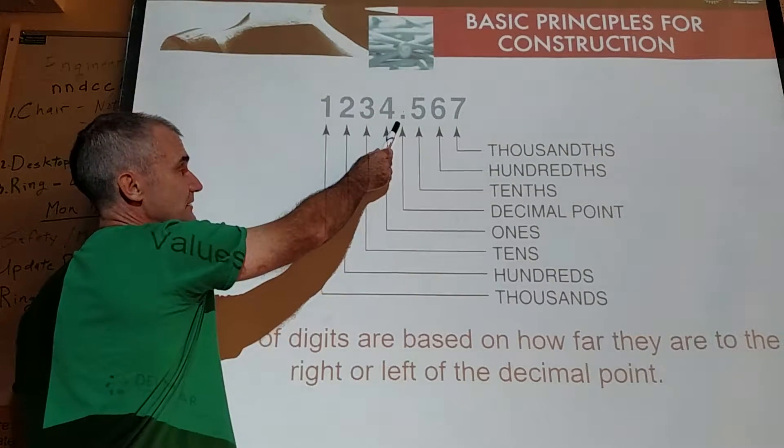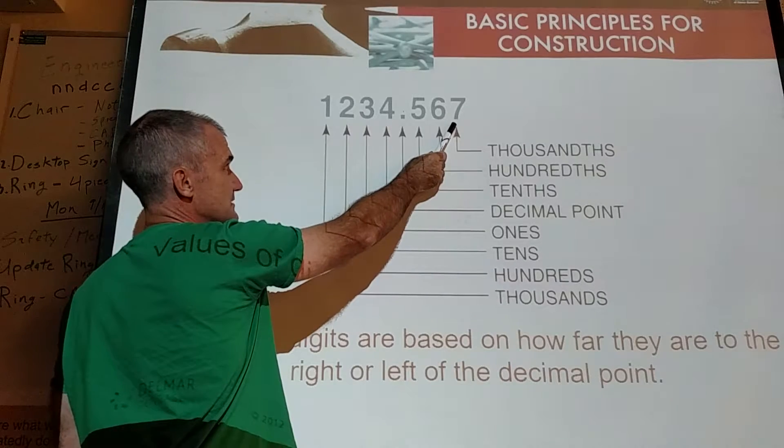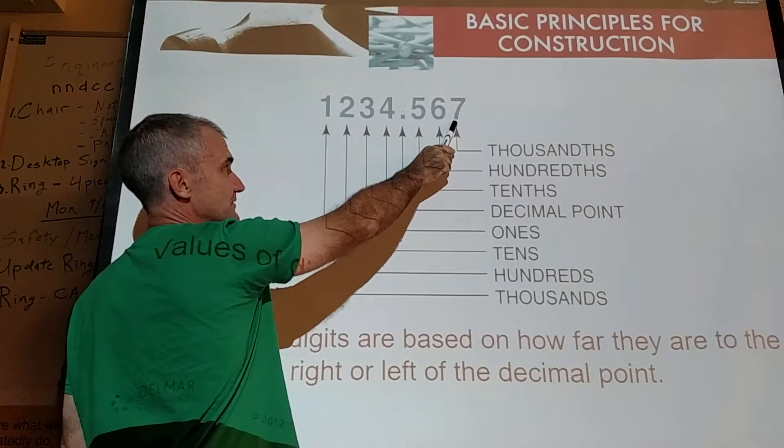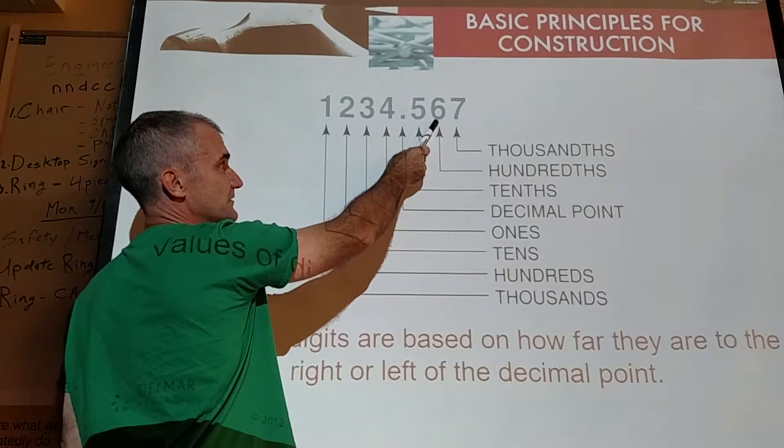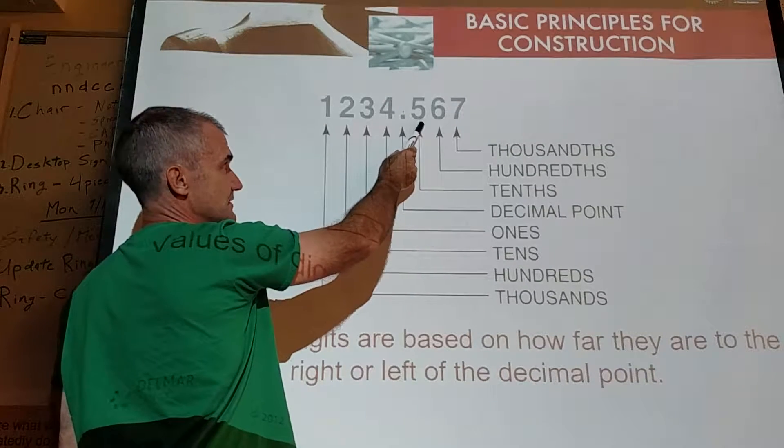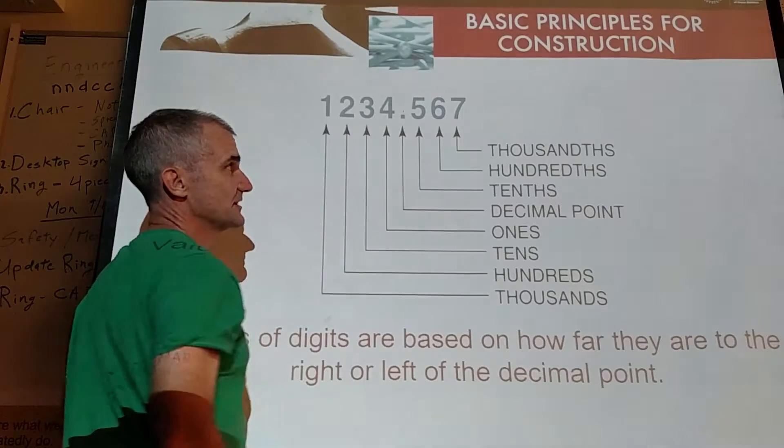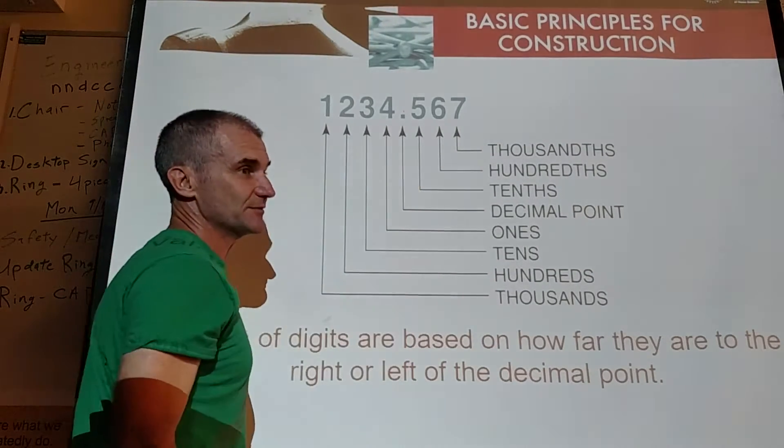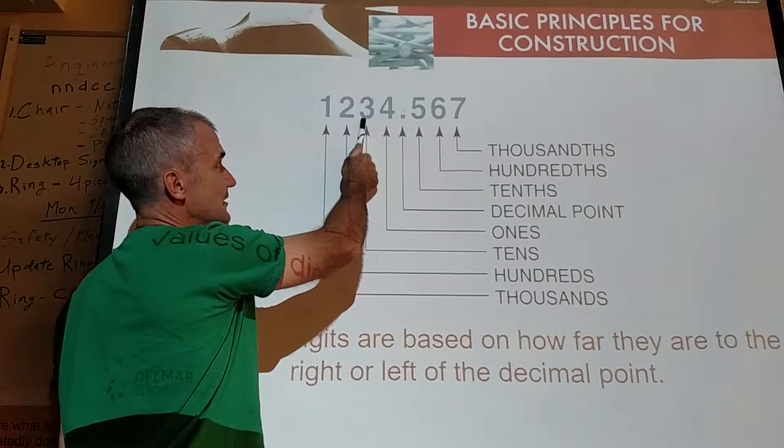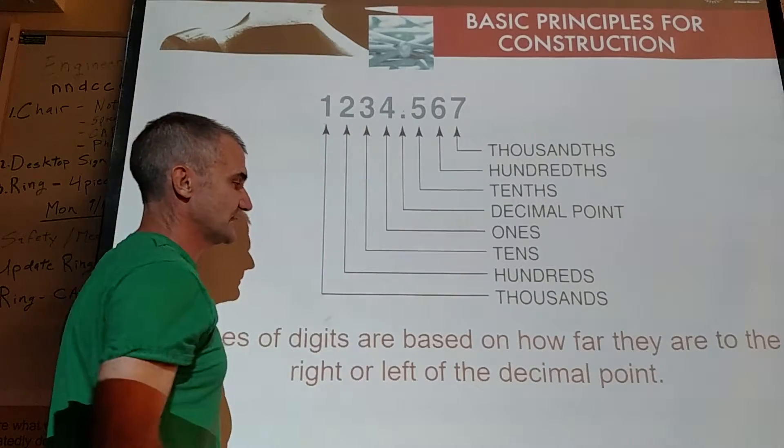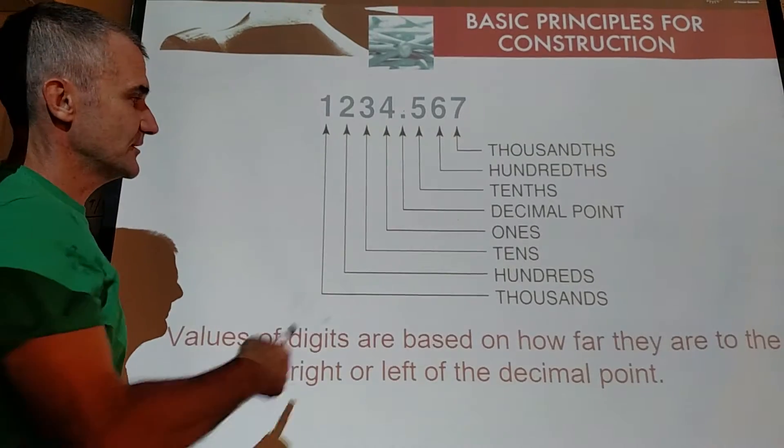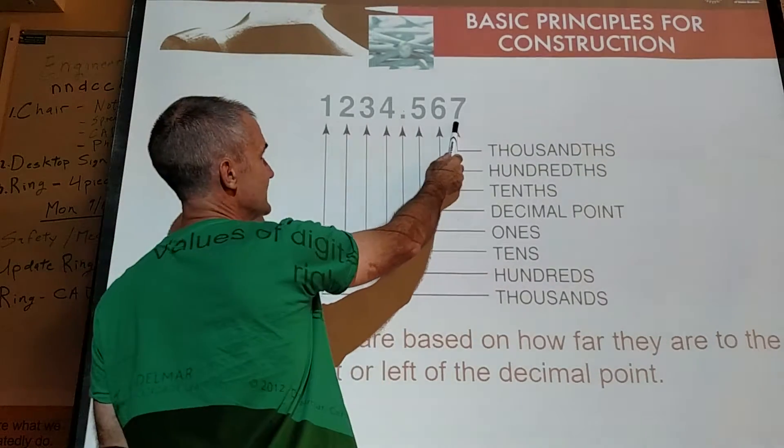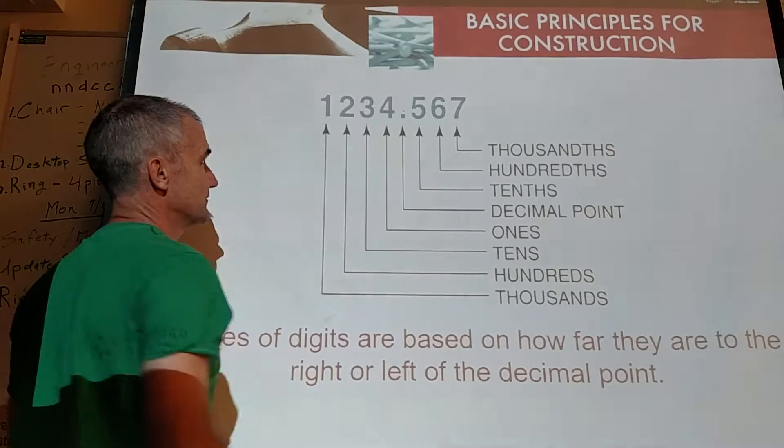So here's our decimal point here. This is our thousandths place, so if I just had 0.007, that would be 7 thousandths. This is our hundredths place and our tenths place. So this is 567 thousandths of an inch. If I just had 0.5, that would be 5 tenths. This is our ones place, our tens, our hundreds, and our thousands place. The further to the right, the smaller, the further to the left, the larger.